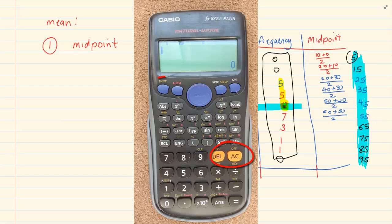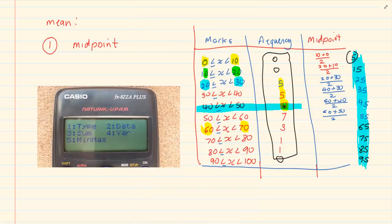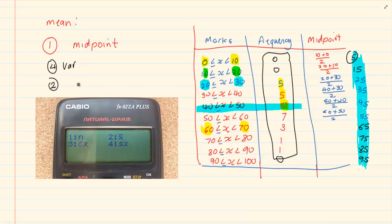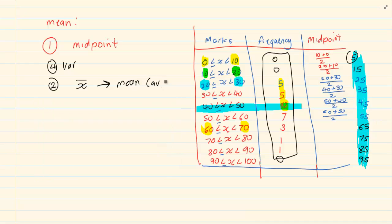After you have entered all your data, you are going to press AC. Then you are going to press shift 1, go under number 4 which is variance, and then number 2 which has the mean sign. Press equal to and it will give us our average which is equal to 46.56. And that is how you calculate mean.